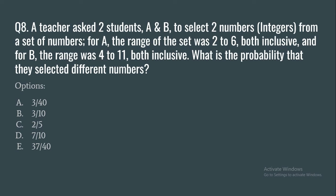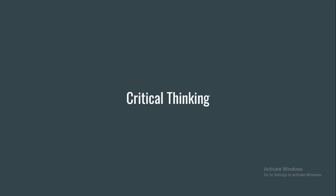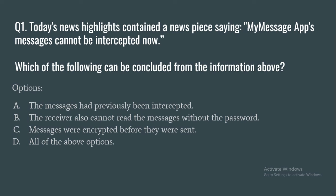Question 8: A teacher asked two students A and B to each select two numbers from a set. For A, the range was 2 to 6 (both inclusive), and for B the range was 4 to 11 (both inclusive). What is the probability that they selected different numbers? Options: 3/40, 3/10, 2/5, 7/10, or 37/40.